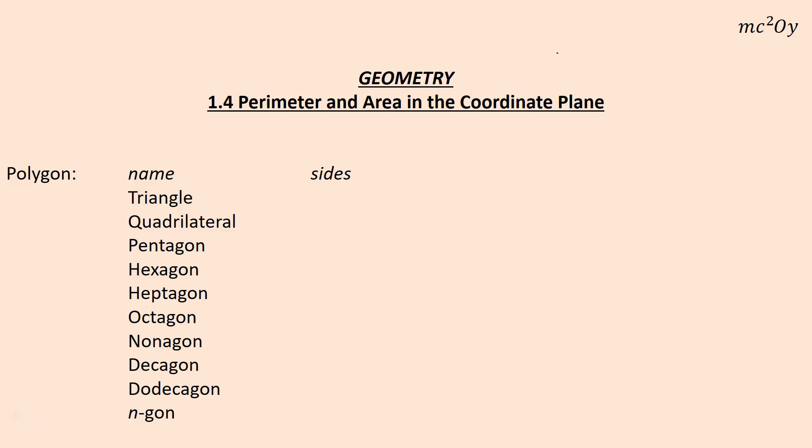We're going to talk about perimeter and area in the coordinate plane for geometry. In this lesson we talked about the different types of polygons, knowing that a polygon is a closed shape with straight sides and sides that come together at points which we call vertices.